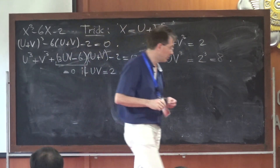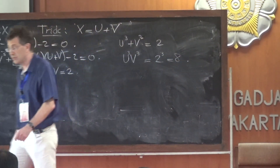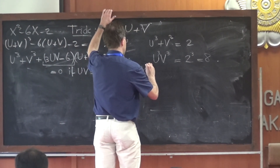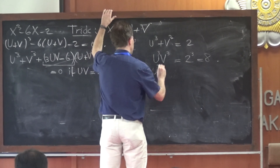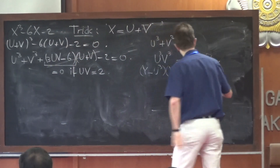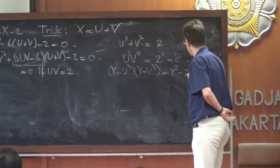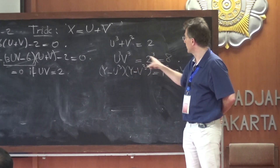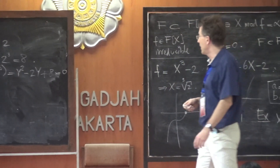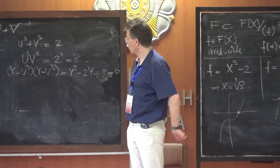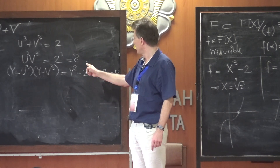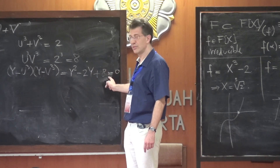Now u cubed and v cubed are two numbers for which you know both the sum and the product. That means the quadratic polynomial with roots u cubed and v cubed is known: since these two roots have sum 2, it starts y squared minus 2y, plus their product, which is 8. So u cubed and v cubed are roots of y squared minus 2y plus 8, and that's something we can now solve using the quadratic formula: y equals 1 plus or minus the square root of 1 minus 8.